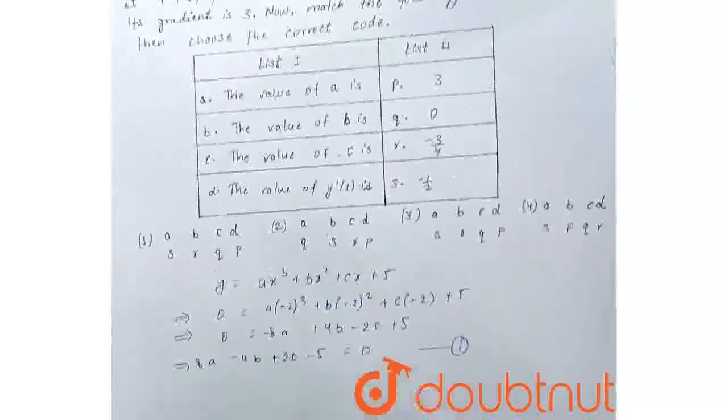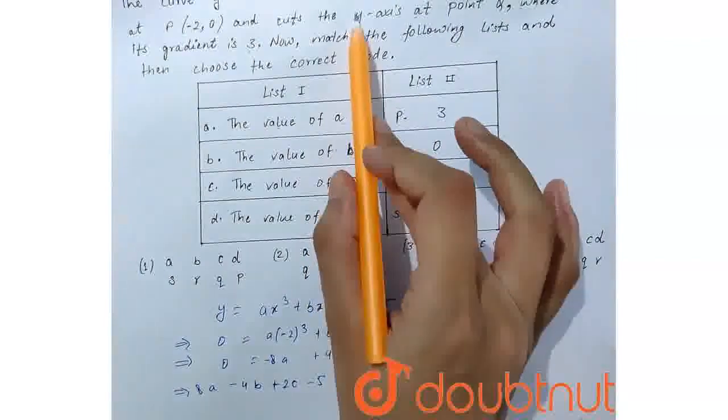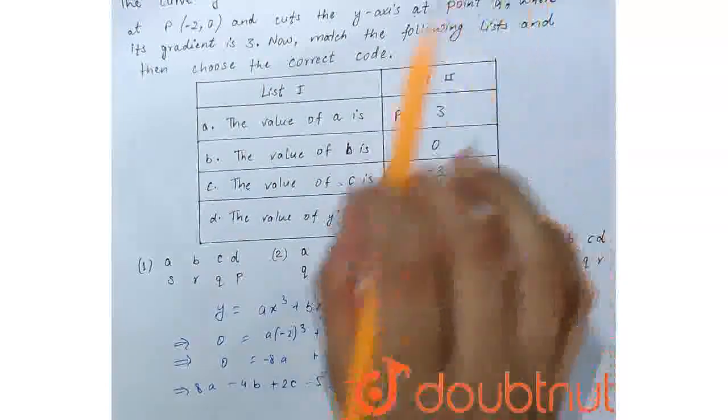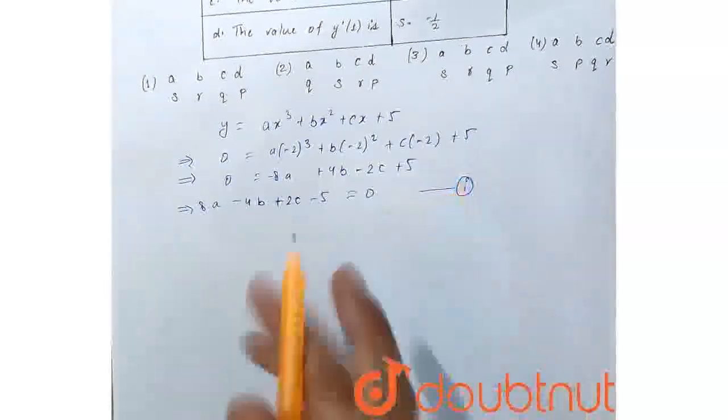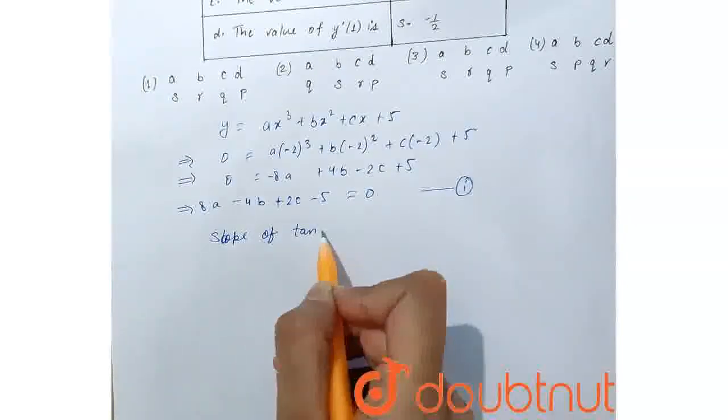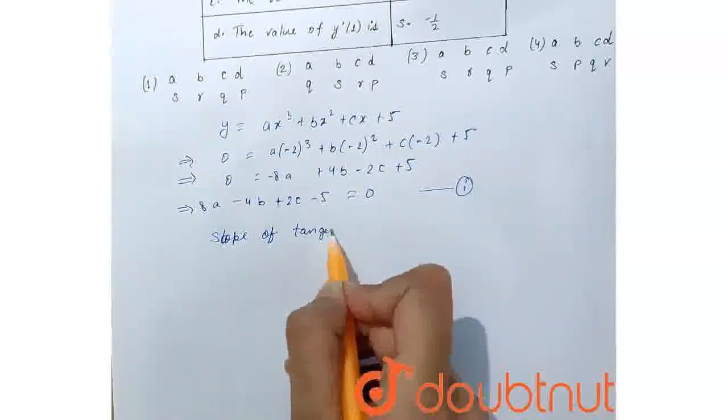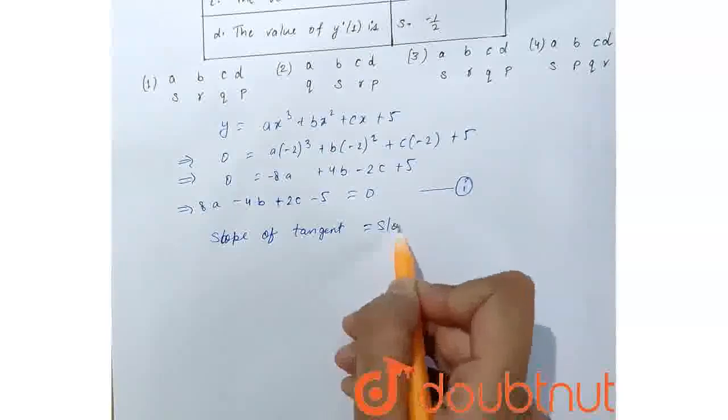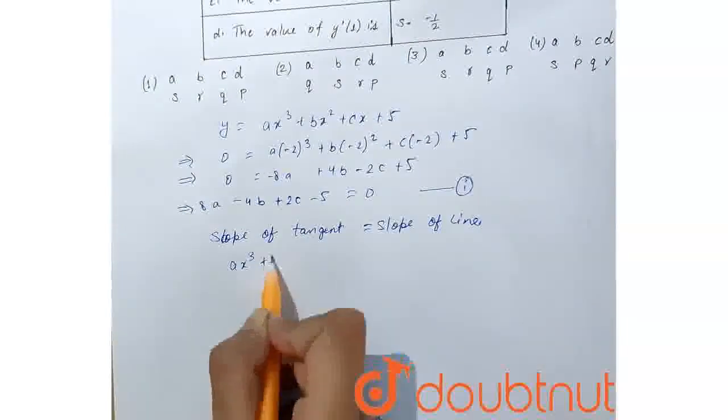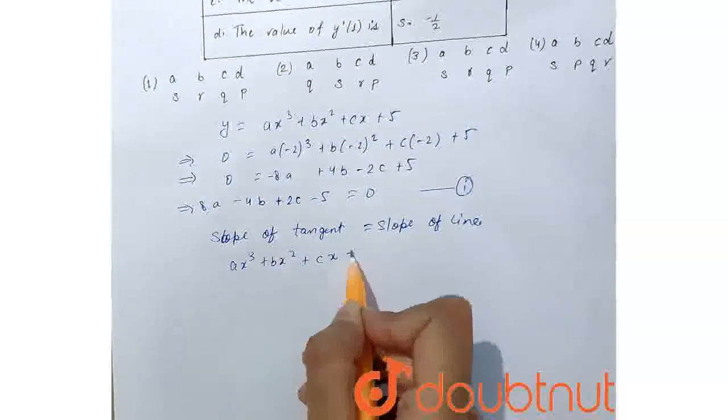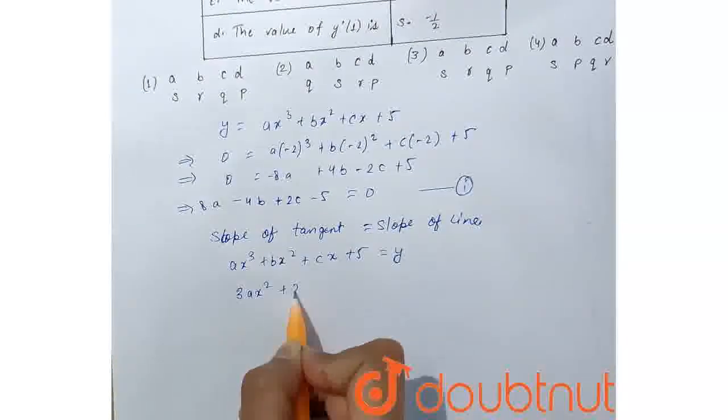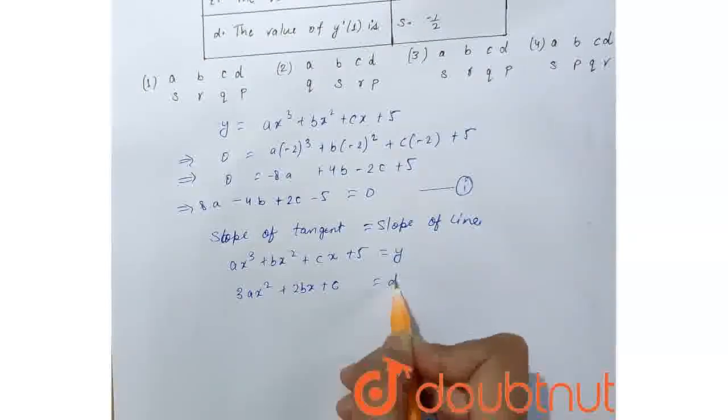Now in the question, it is given that it cuts y-axis at point q. So, the slope of tangent equals slope of line. So, ax³ plus bx² plus cx plus 5 equals y. Differentiate it with respect to x. So, 3ax² plus 2bx plus c equals dy/dx.